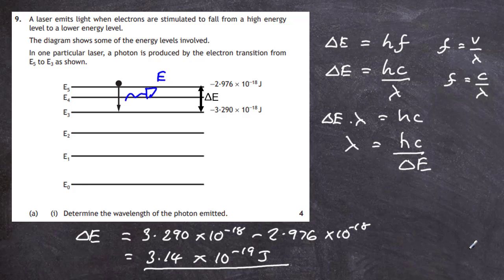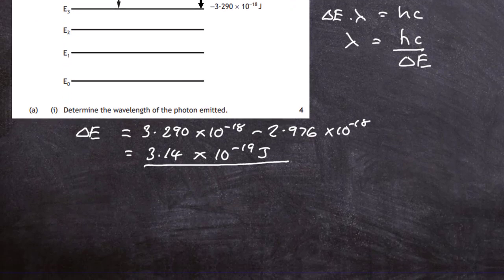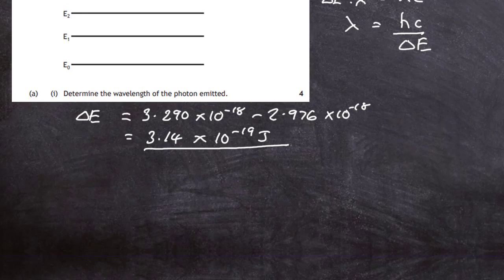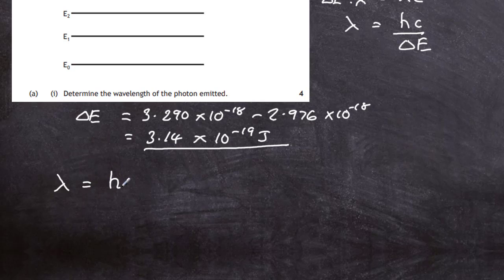Now let's plug the numbers into our equation. Wavelength lambda equals HC, where H is Planck's constant and C is the speed of light, divided by the energy difference in the energy levels. Planck's constant is 6.63 times 10 to the minus 34 joule seconds if you look in the data book.